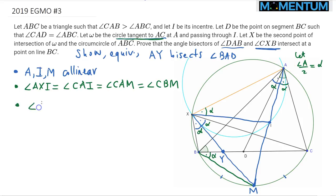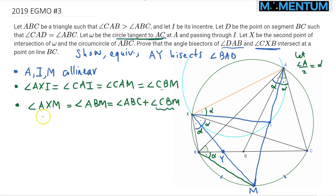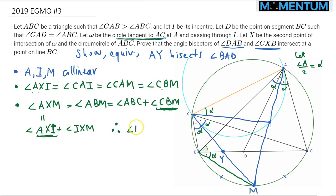For the second part of the angle chasing: angle AXM is congruent to angle ABM since they subtend the same arc. I split ABM as angle ABC plus angle CBM. Since CBM equals AXI, I split AXM as AXI plus the remaining piece. Because CBM is congruent to AXI, it follows that angle ABC, i.e., angle B, is congruent to angle AXM.